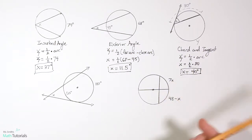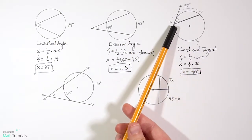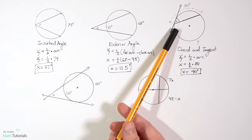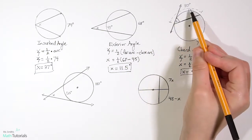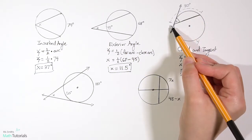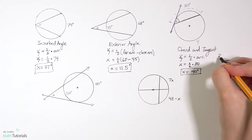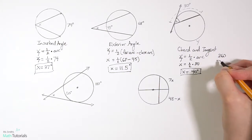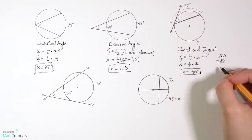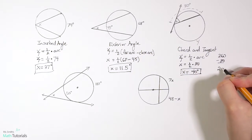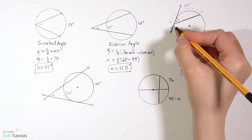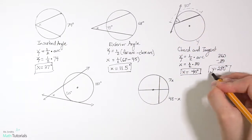They also want to know the arc measure y. We use our knowledge that a circle is 360 degrees. We know one arc is 80 degrees, so we subtract: 360 minus 80 equals 280 degrees. So y equals 280 degrees.